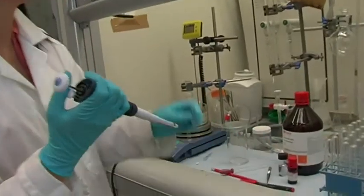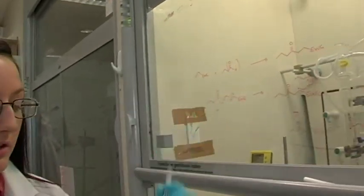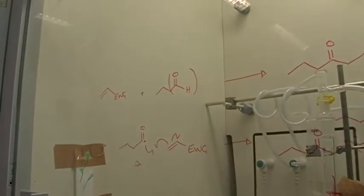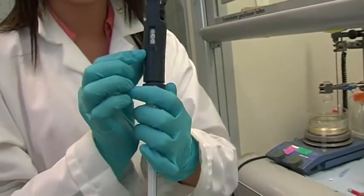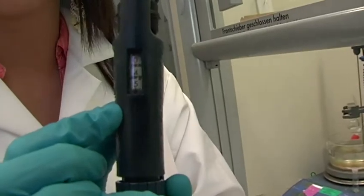The final thing I need to add is my aldehyde — five equivalents of that, which works out to be 0.45 mL. I can add this very accurately using the Gilson pipette, set to 0.450, which is 450 microlitres.